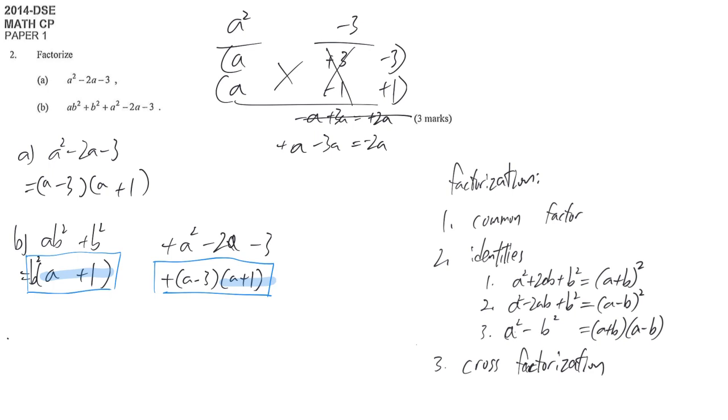We just do the same to extract the common factor. We write down the common factor on the left hand side. And then we prepare a bracket to write down what is left inside.